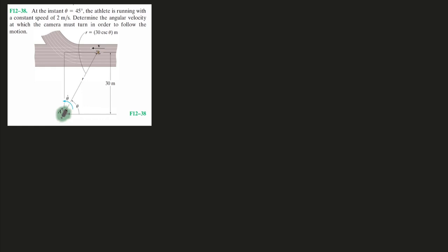At the instant theta equals 45 degrees, the athlete is running with a constant speed of 2 meters per second. Determine the angular velocity at which the camera must turn in order to follow the motion. So they want theta dot, that instantaneous rate of change of theta with time, really the angular speed.